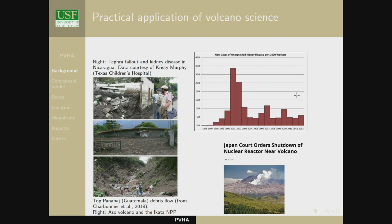At Toliman, a debris flow was generated in the town of Panabaj, which we initially thought killed 300 people, but later studies showed it killed about 900 people. It is, I believe, the largest disaster in the 21st century so far, and it's a non-eruptive event caused by alteration of pyroclastic products and their remobilization during rainfall.